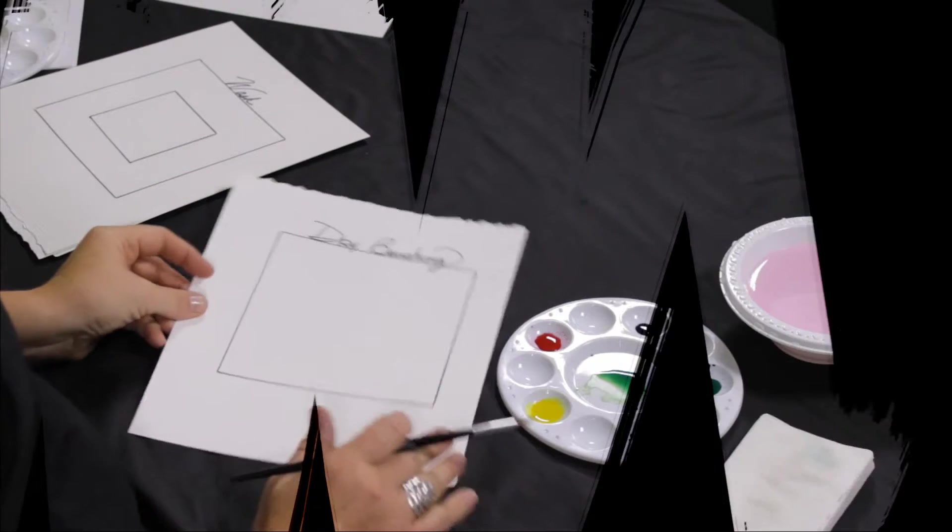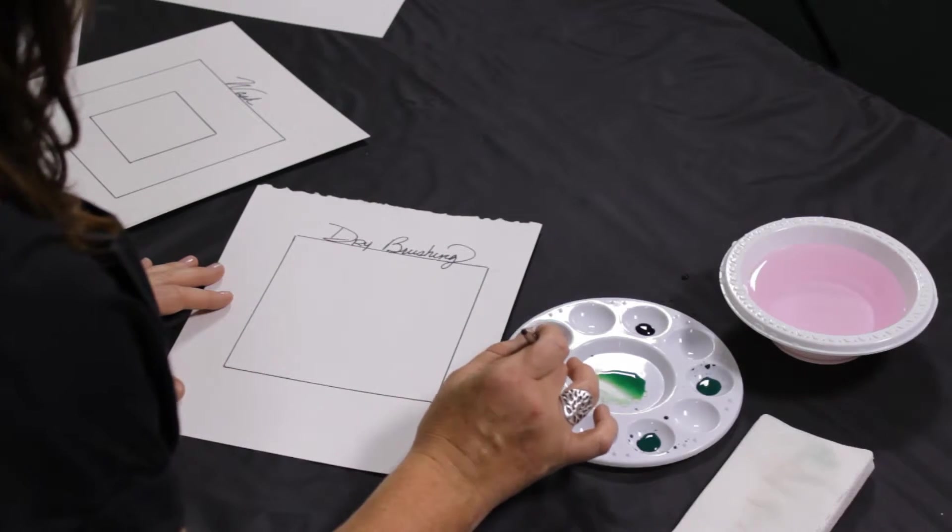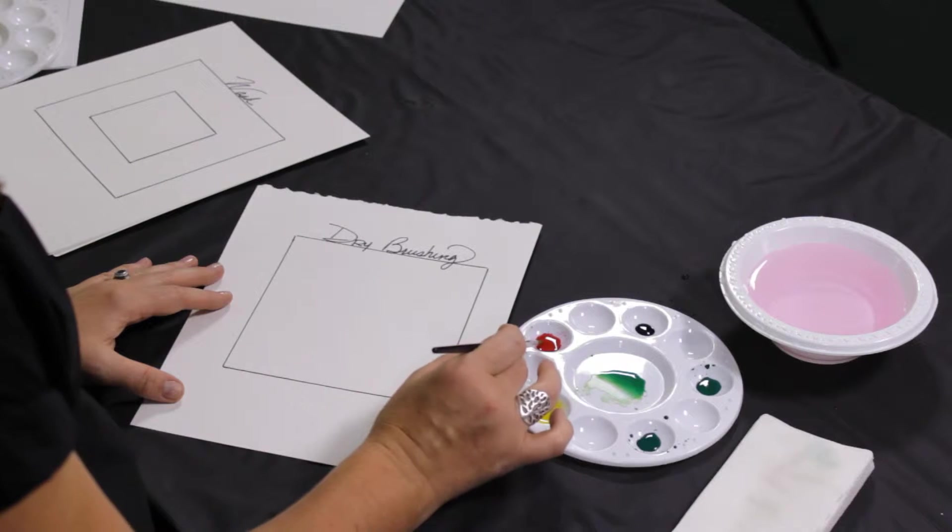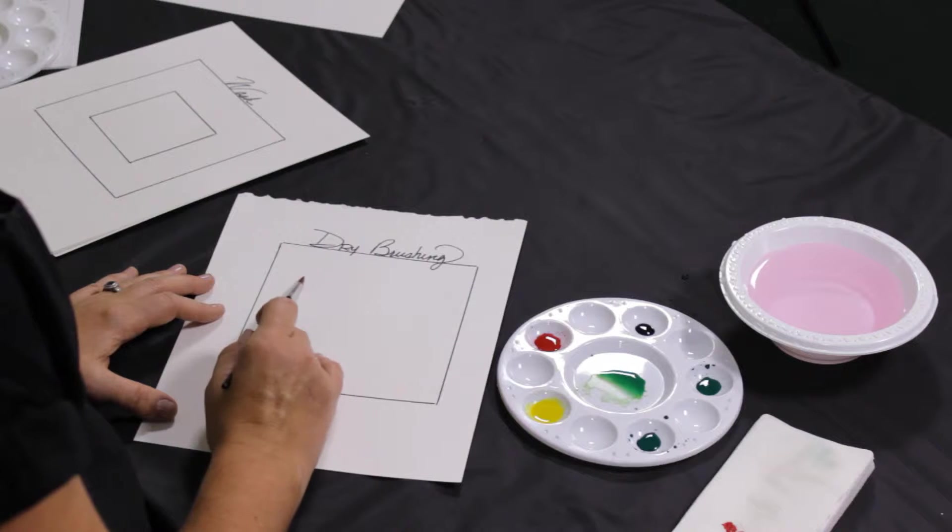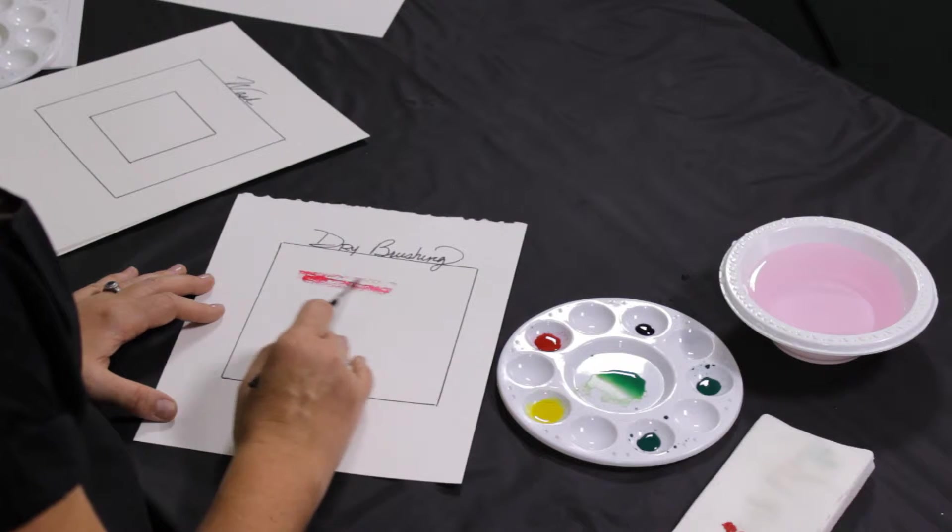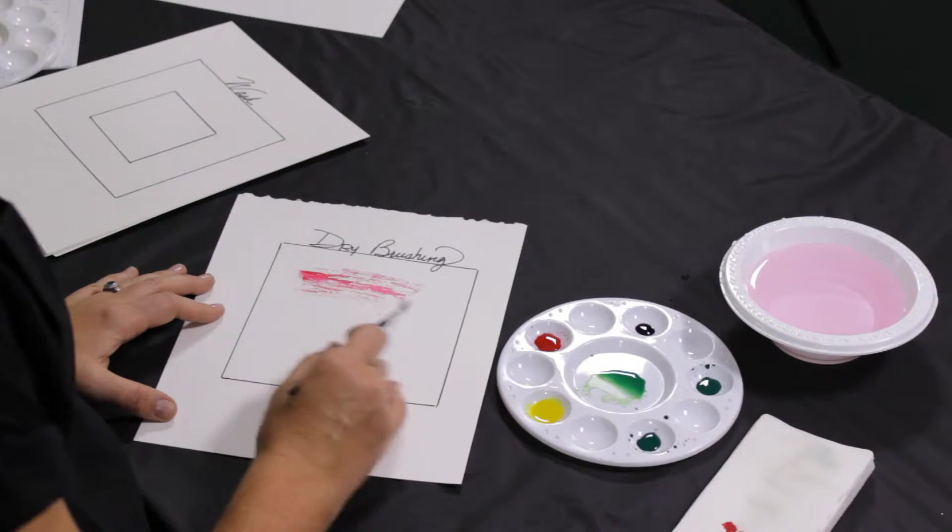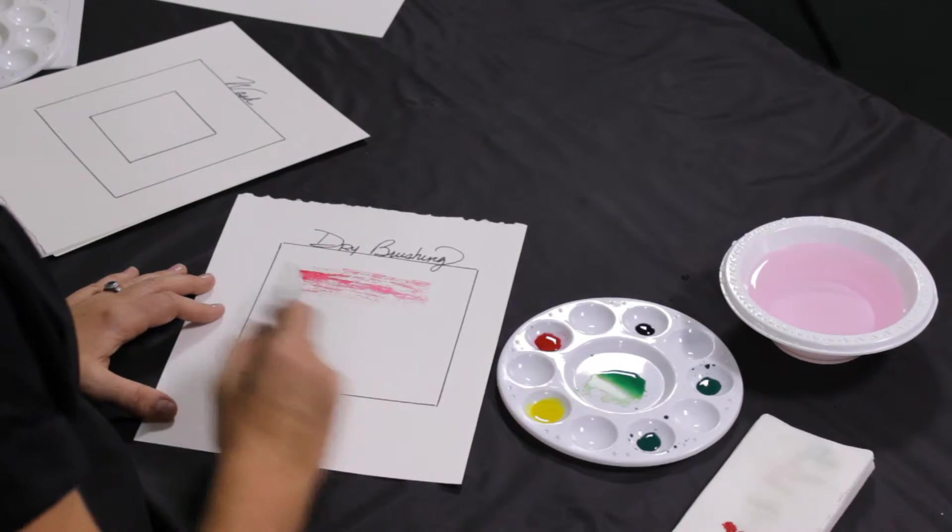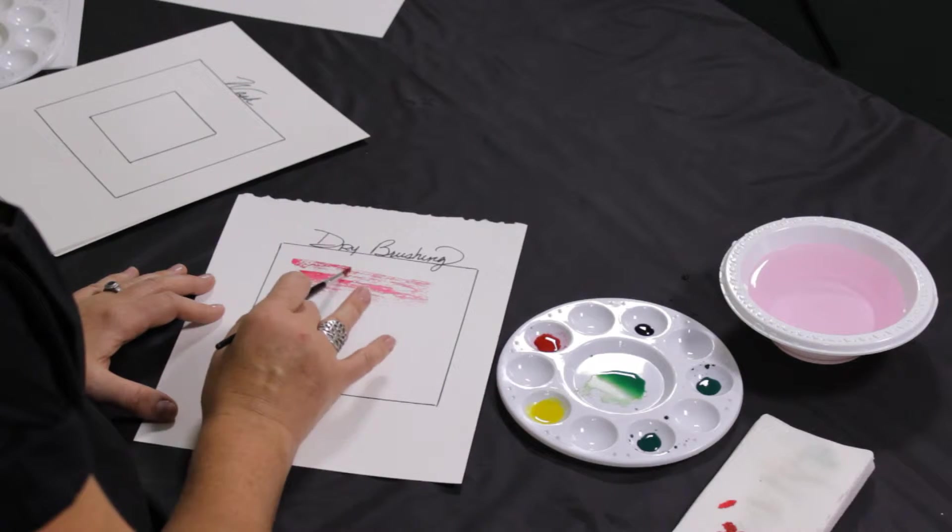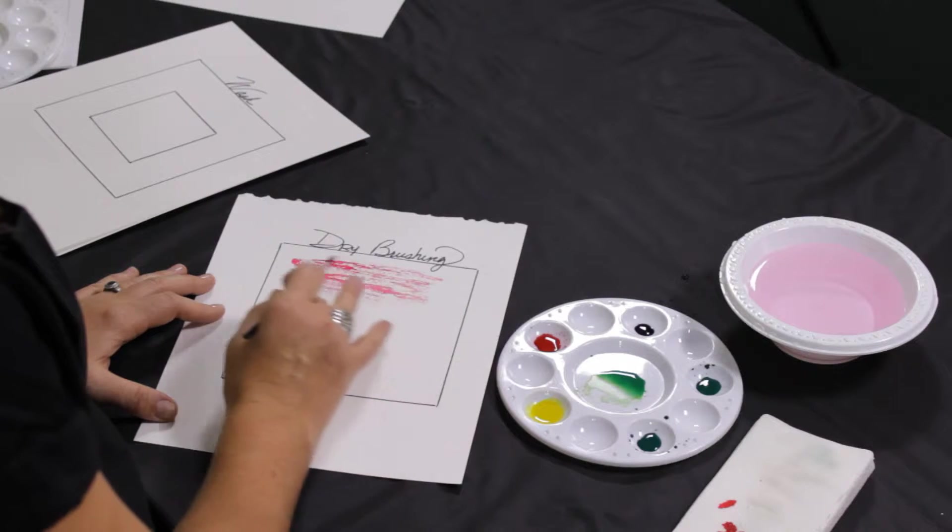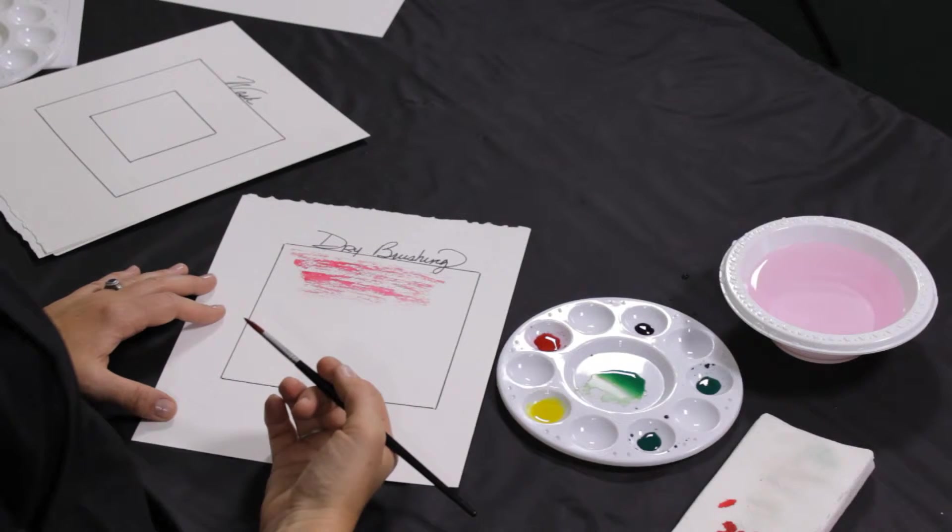Okay so the next technique is dry brushing. This is a really good way to get some interesting texture in your painting. Basically what you want to do is to get some paint on your brush and then dab it on the napkin so that it's not so wet. You really do want to have a dry brush. And you take it and you drag it along the surface to pick up the texture of your cold pressed paper. Remember we said that this has a slight texture. If you had rough paper you would be able to get more of a texture created. A lot of people use this in landscape paintings in order to get the water reflections.